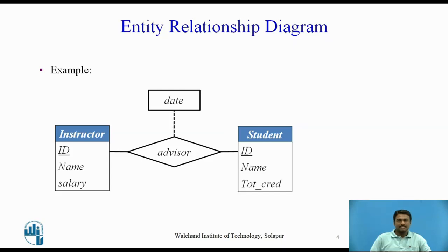Attributes of an entity set that are members of the primary key are underlined. If a relationship set has some attributes associated with it, then we enclose the attributes in a rectangle and link the rectangle with a dashed line to the diamond representing that relationship set. In this example, we have the date descriptive attribute attached to the relationship set advisor to specify the date on which an instructor becomes the advisor.